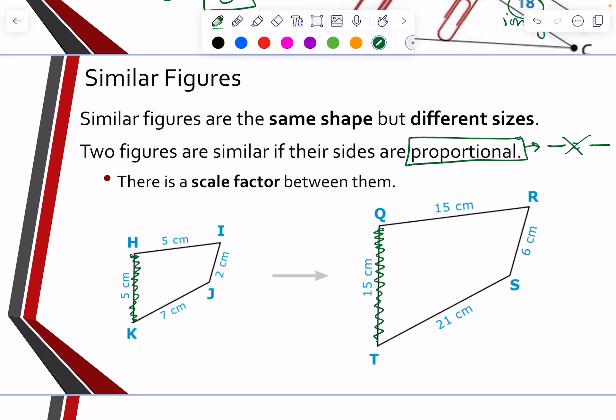So H, K is corresponding to Q, T. So if I set that up into a scale factor, it would be a 5 to 15. Let's try another one. If I go HI to QR, 5 to 15. If I go IJ to RS, 2 to 6. And if I go KJ to TS, that is a 7 to 21.